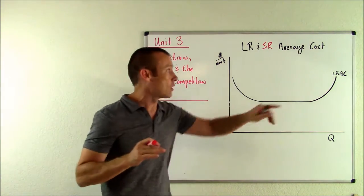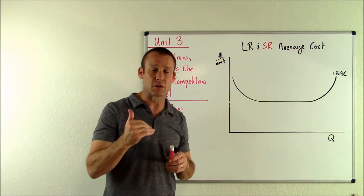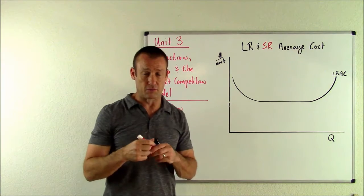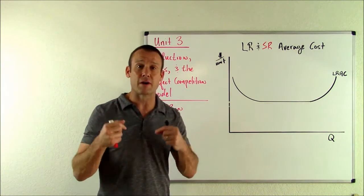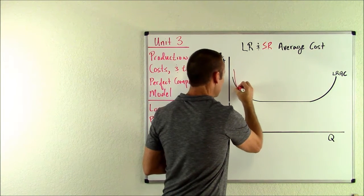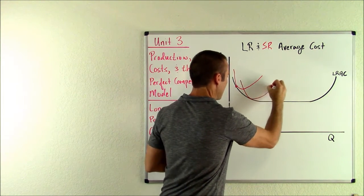This is the really interesting part about the long run average cost curve, is it is composed of tangency points related to the short run average total cost curve. So I'm going to put in our short run average total cost curve. Here they are. They have tangency points.